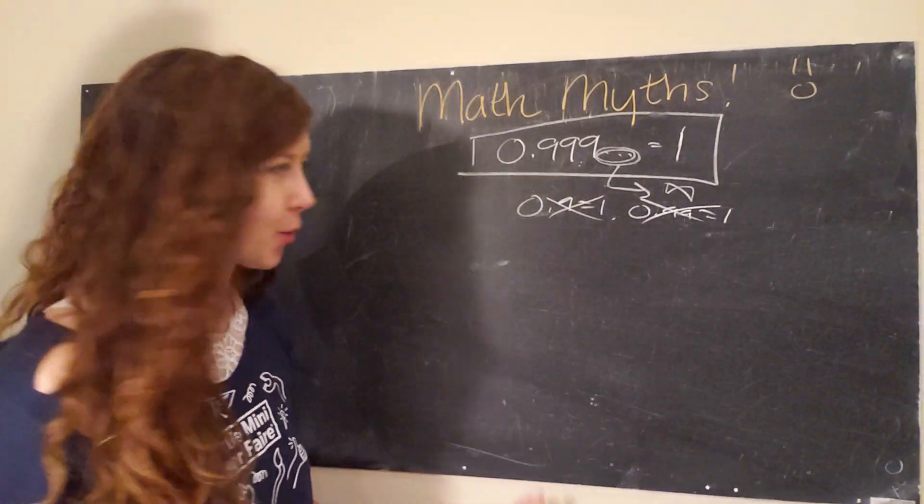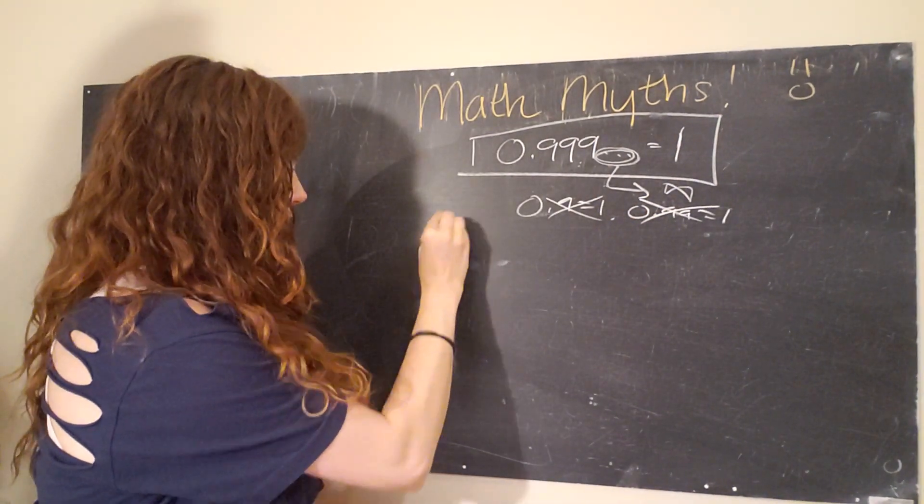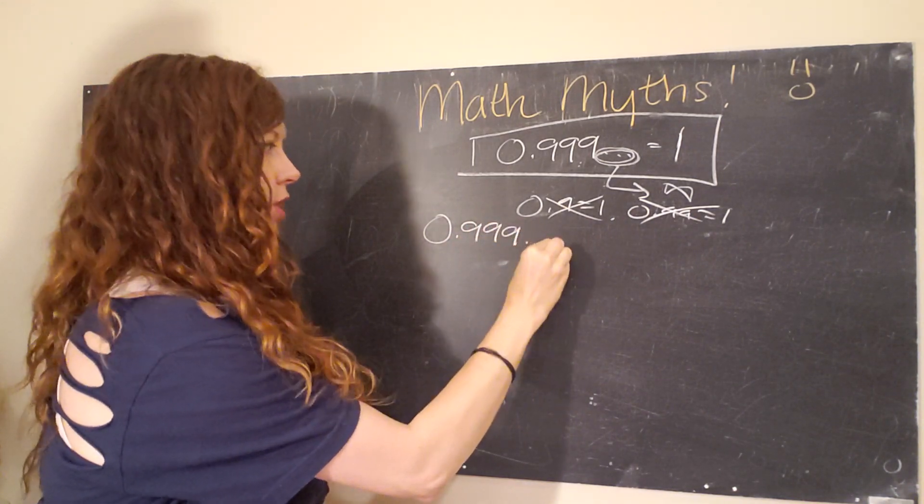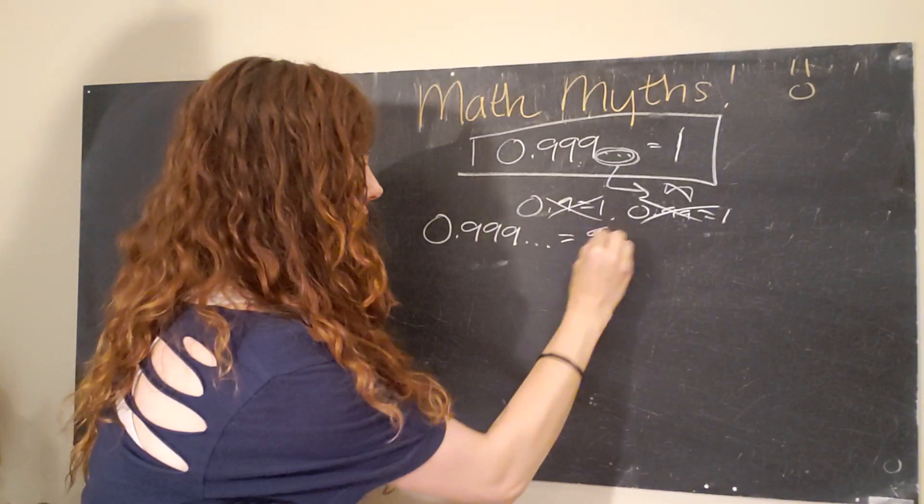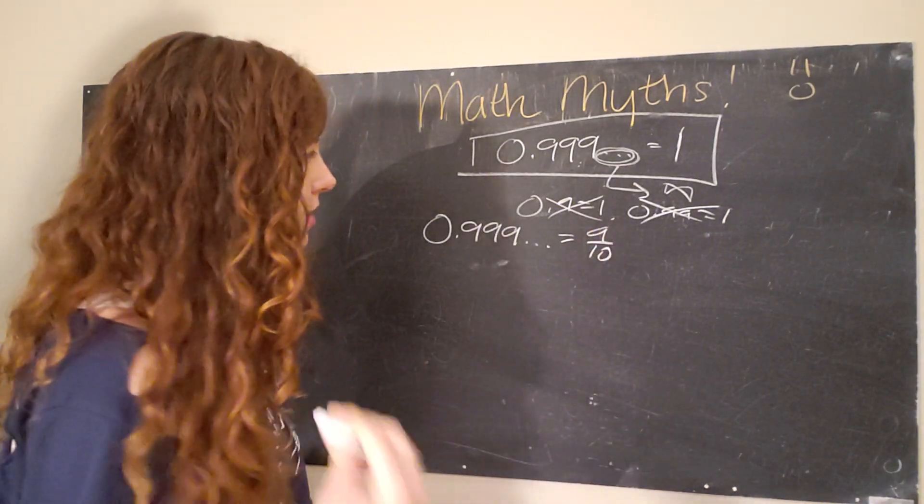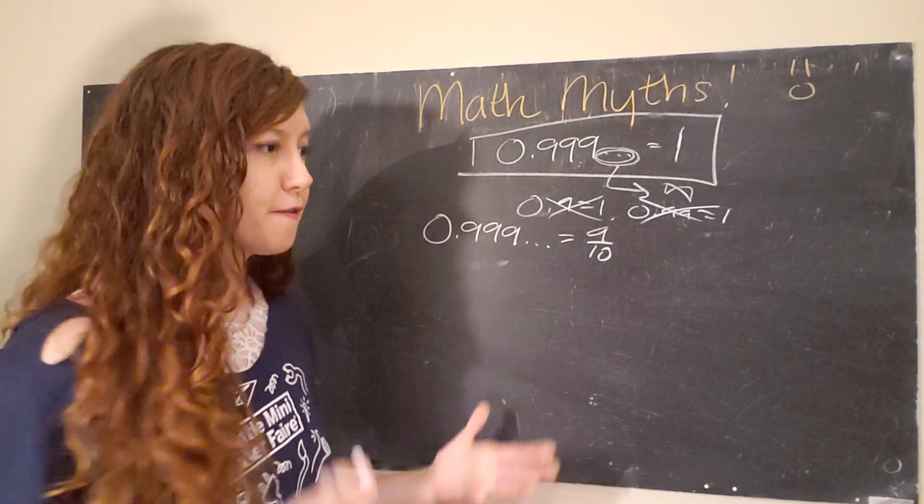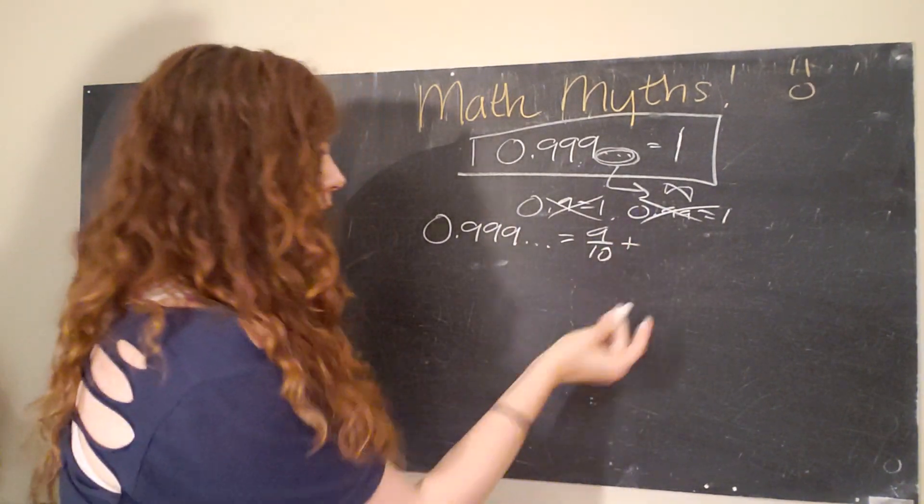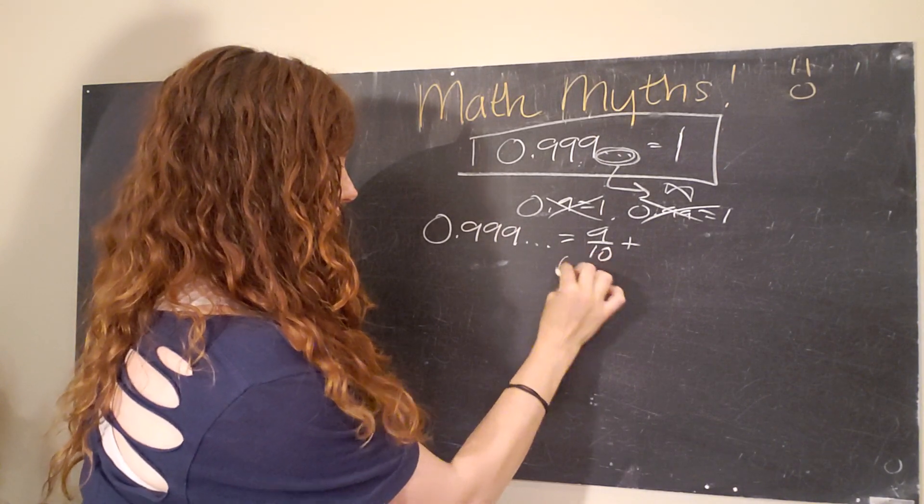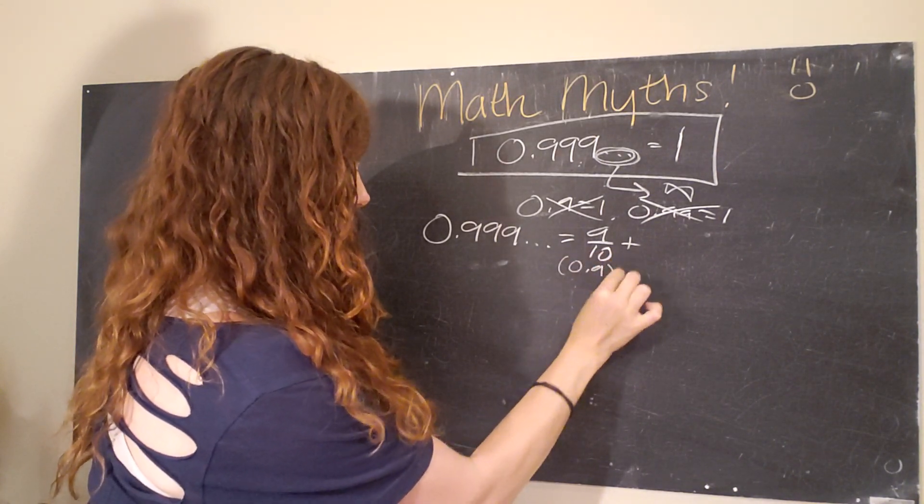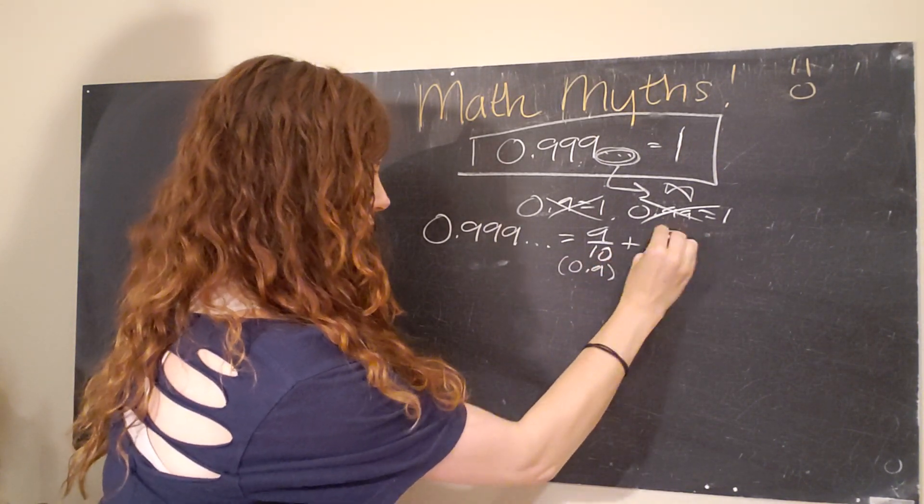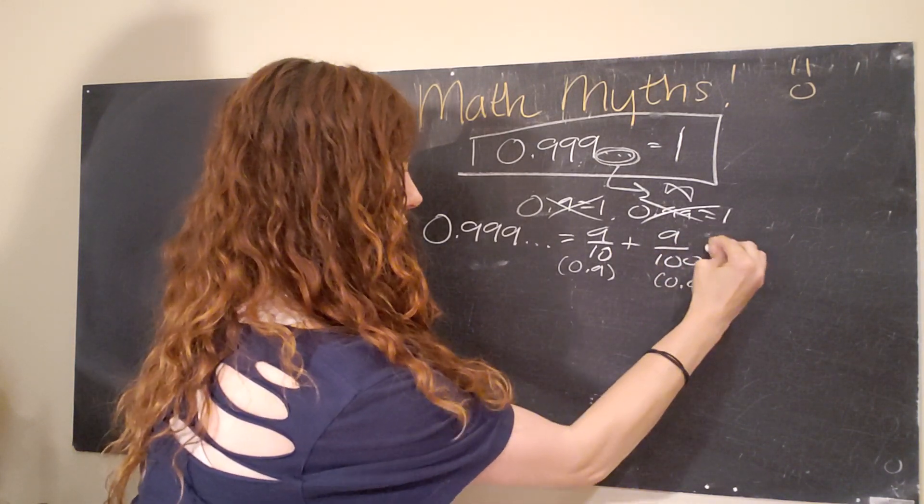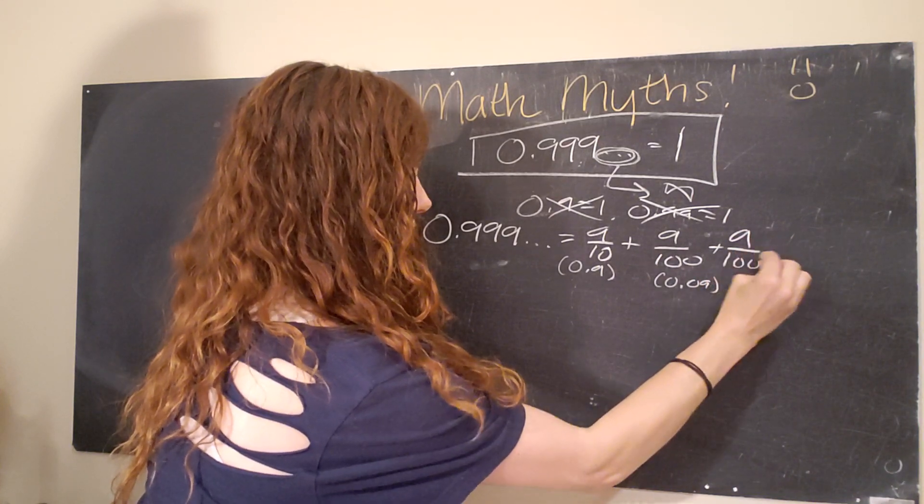So cool. All right, here we go. So the infinite number 0.999 dot dot dot can be rewritten in terms of fractions. And this is helpful because our geometric series, we want to figure out what the first term is and what the ratio of our geometric series is.